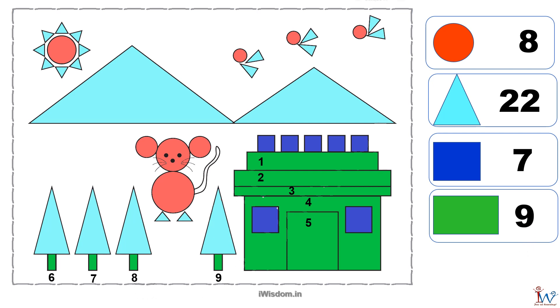So in summary we have eight circles, twenty-two triangles, seven squares and nine rectangles.